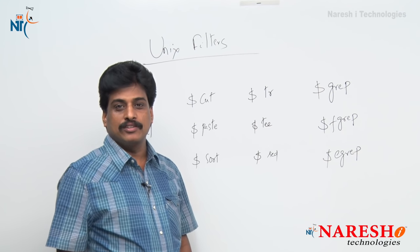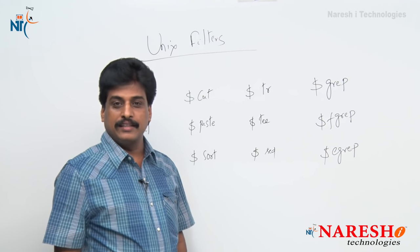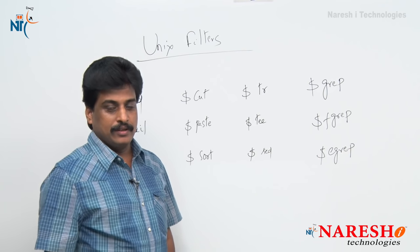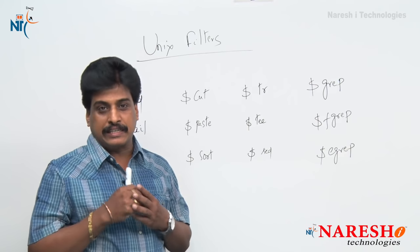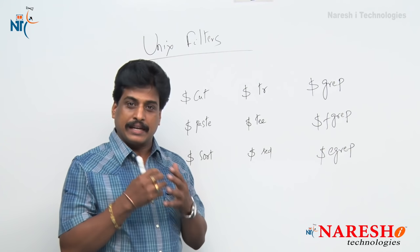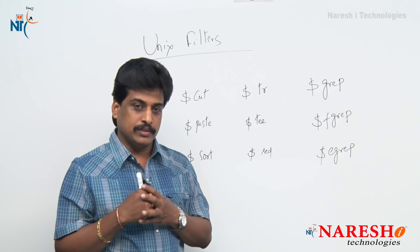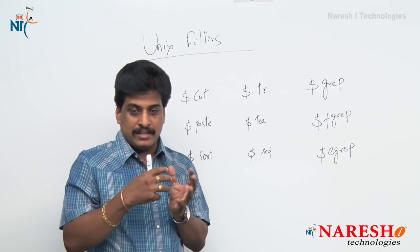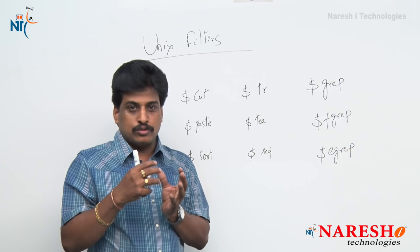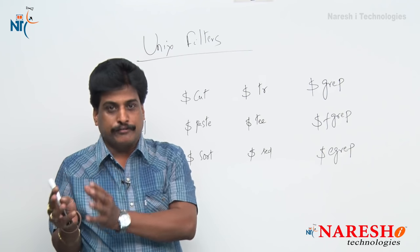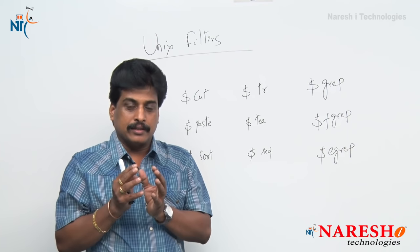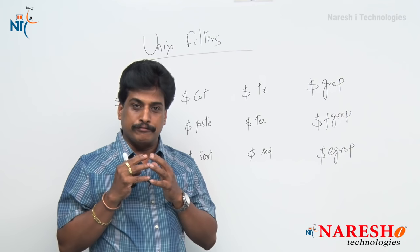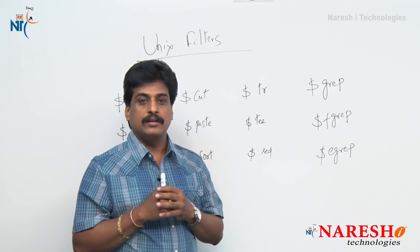Hi guys, welcome to Narayashi Technologies. This is Subbaraju. We will see another Unix video session with Unix filters. A filter is something that filters whatever we require as output. For example, two files are given as input, and we redirect some required lines from those files to a third file — that is a filter. There are many filters in the Unix operating system which we use frequently in the IT environment.